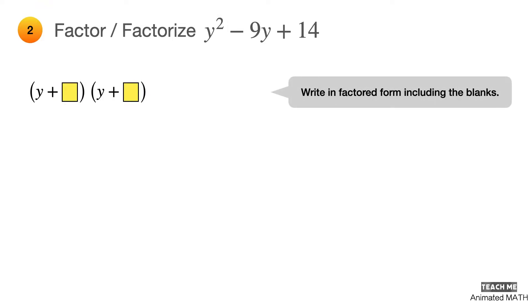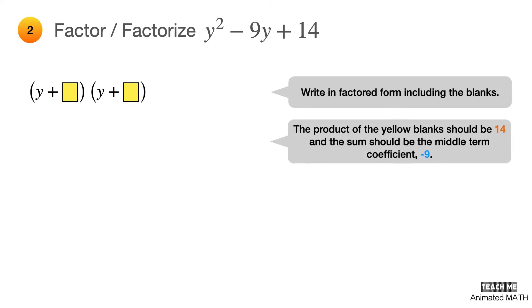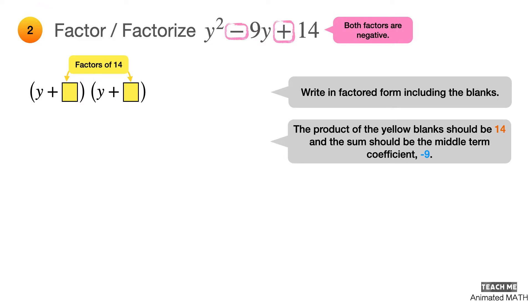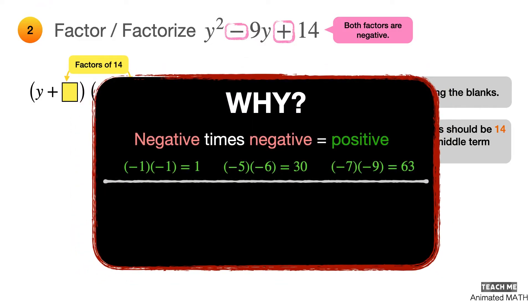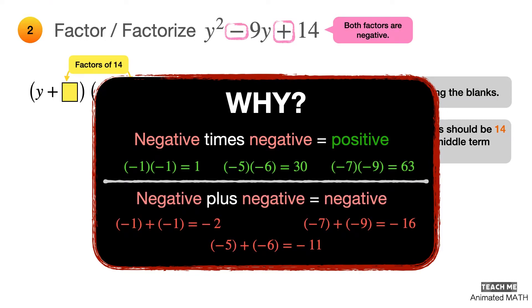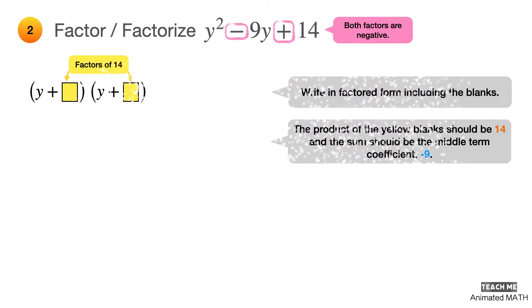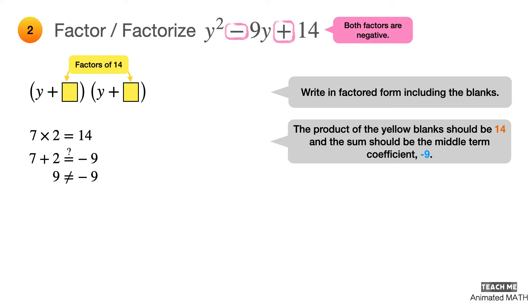Write the polynomial in factored form, including the blanks. Multiplying the yellow blanks should be equal to 14, and adding them should be equal to the middle term coefficient negative 9. You can use a technique to reduce the number of trial and errors. Since the middle term is negative and the last term is positive, it means that both factors are negative. Because if you multiply two negative numbers, the product will be positive, and if you add two negative numbers, the sum is negative. For the sake of demonstration, let's see what happens when you test two positive factors like 7 and 2. The product of 7 and 2 is 14 as expected, but when you add them, the sum is 9, which is not the middle term coefficient we are looking for.